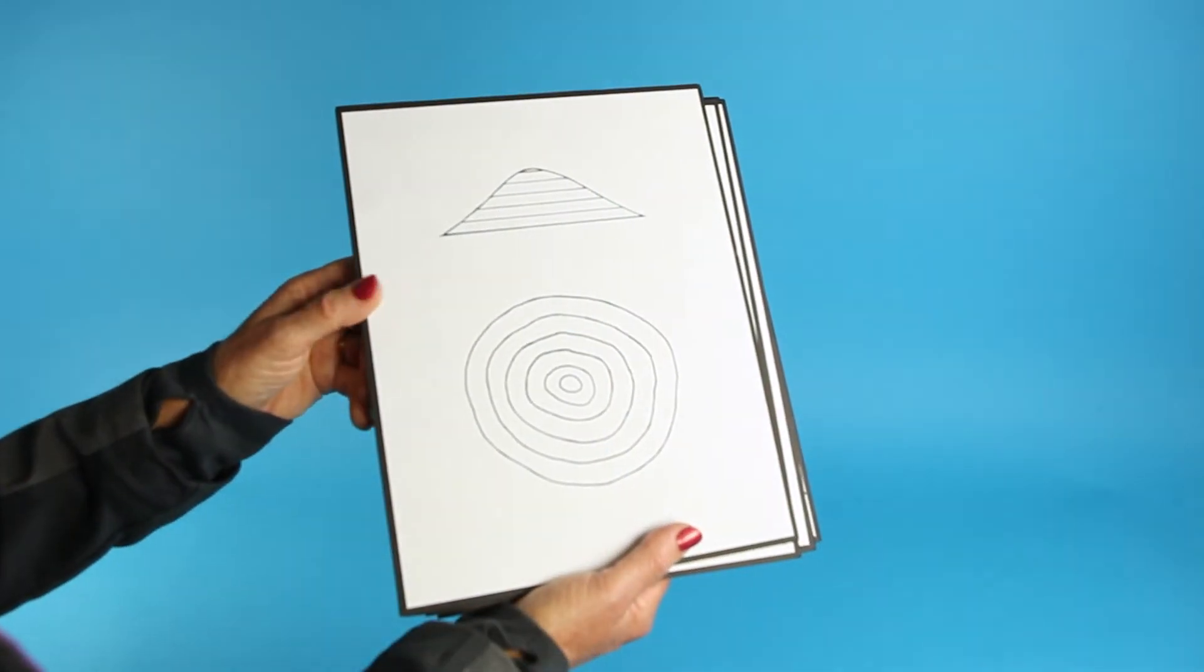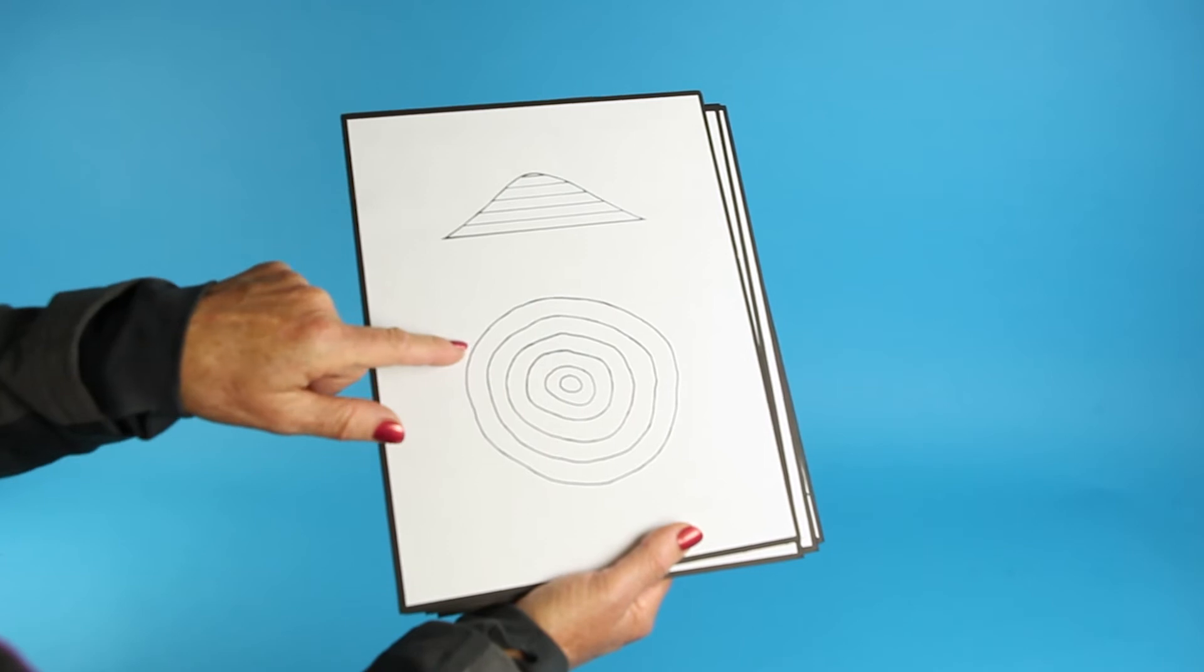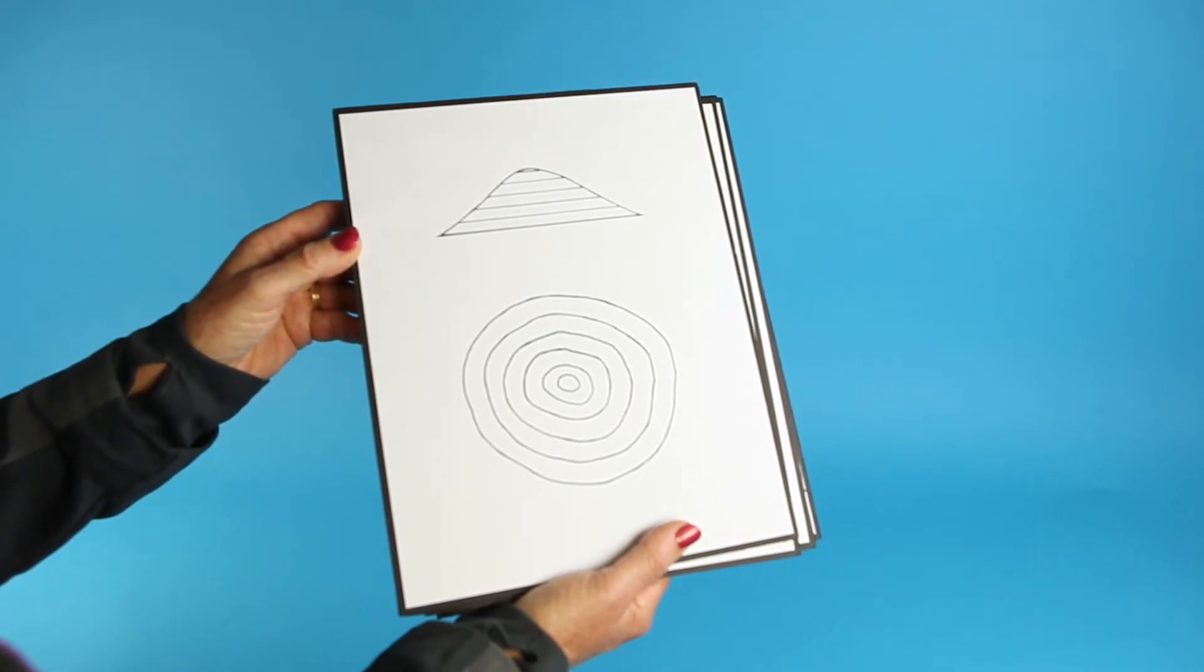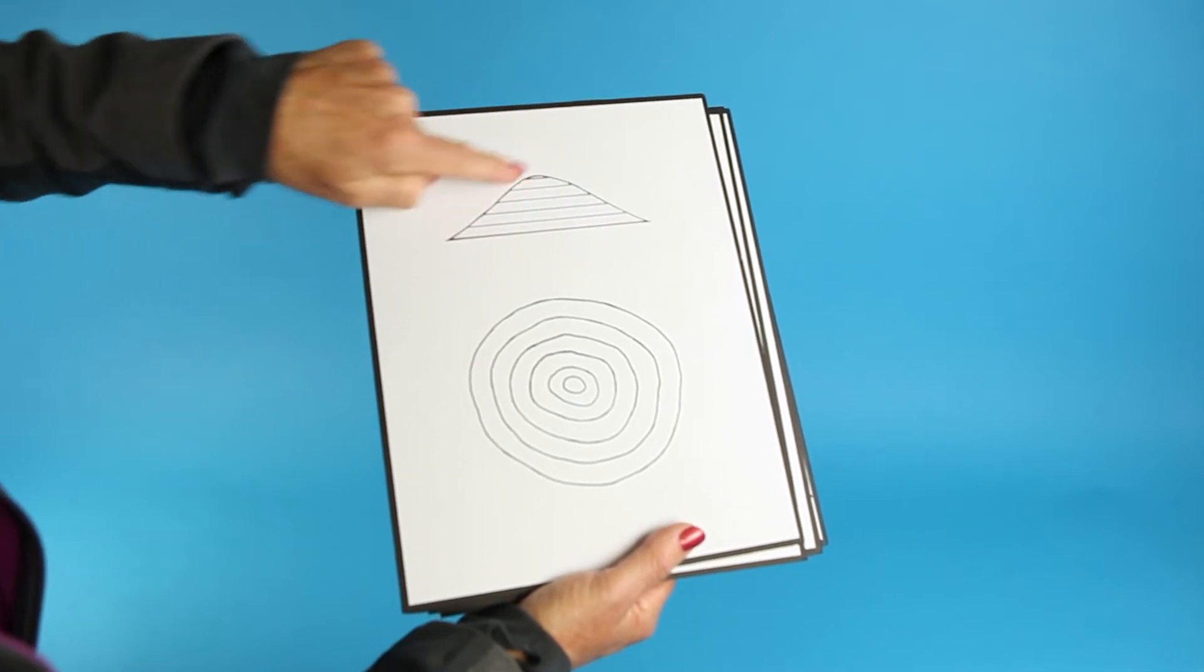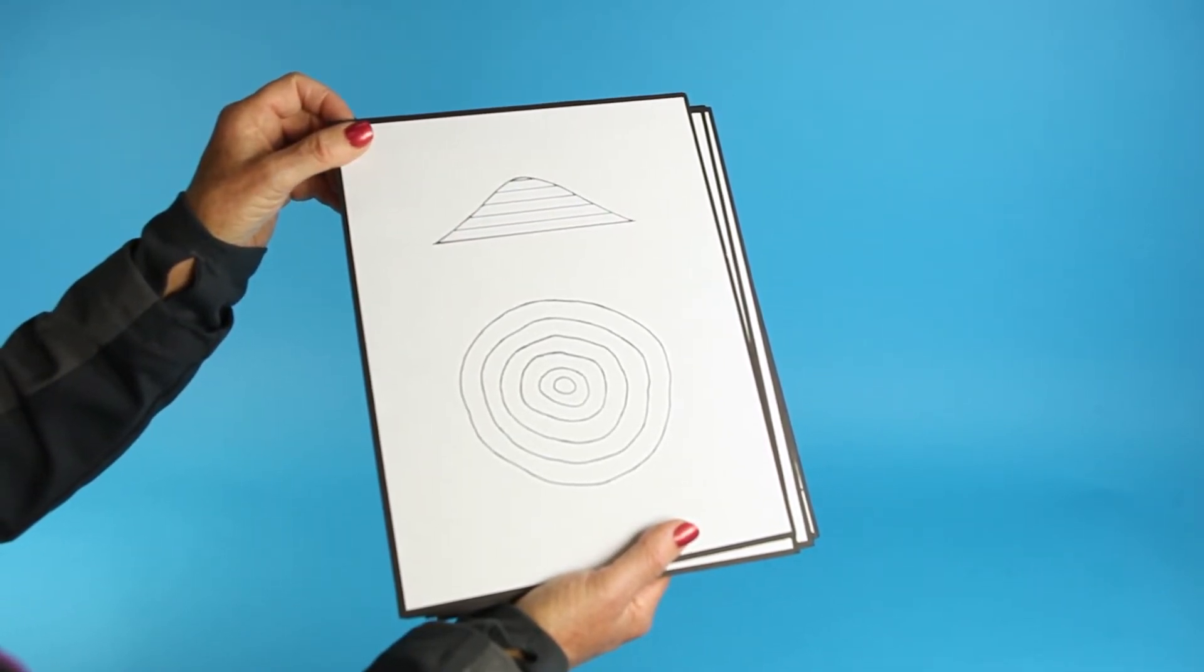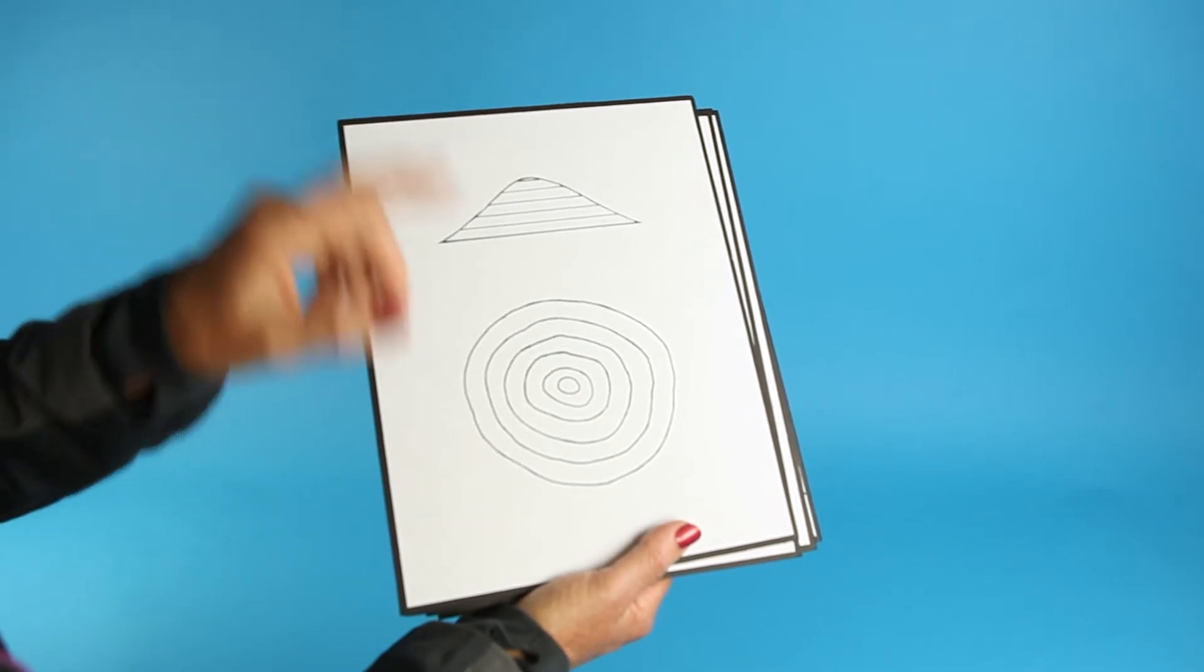This first pattern shows a cone-shaped peak. On the map, everything is shown looking straight down. This is what the same feature would look like from the side in the field. The concentric circles look like a bullseye or a target, and the smallest circle is the top.